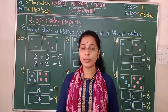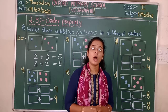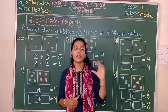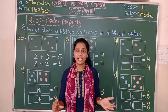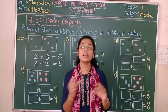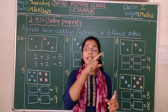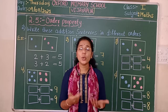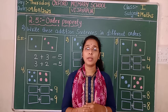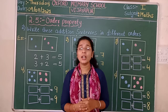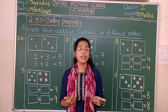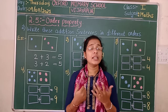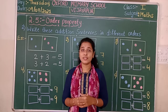What do we mean by order property? By changing the order of the addends — the first addend is considered as the second addend, and the second addend is considered as the first addend. If we change the addends like this, there will be no change in the sum. The sum we get will be the same.